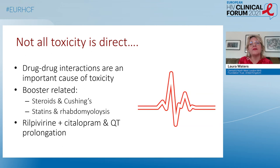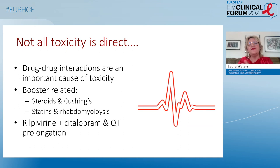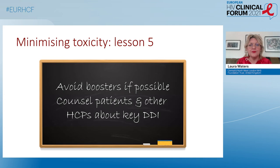Not all toxicity is direct — drug-drug interactions are an important cause. Boosters are a major culprit; steroids and Cushing syndrome, statins and rhabdomyolysis are just two examples of indirect toxicity caused by blocking the cytochrome system through boosters. Rilpivirine, although low risk, could have an impact on QT interval length, and combining it with a drug like citalopram is a caution. Lesson five: avoiding boosters where possible, but making sure we counsel patients and other healthcare professionals about key drug-drug interactions to minimise that as a source of toxicity.